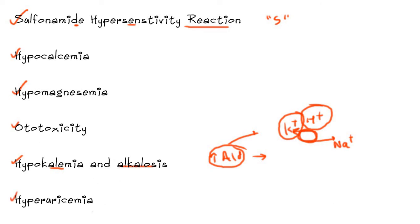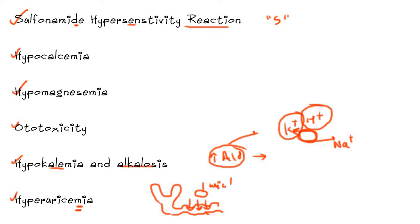The last side effect is hyperuricemia. When loop diuretics are excreted into the lumen of the nephron via transporters in the proximal convoluted tubule, those same transporters are used by uric acid for its excretion. So loop diuretics cause competitive inhibition of uric acid excretion, as a result of which uric acid levels increase, resulting in hyperuricemia.